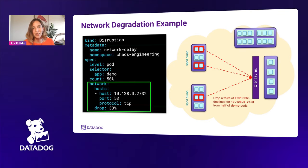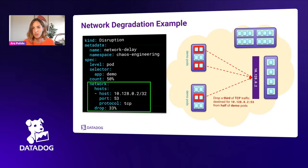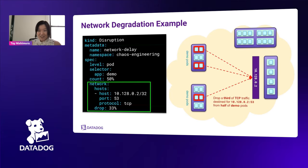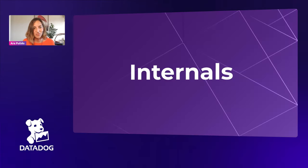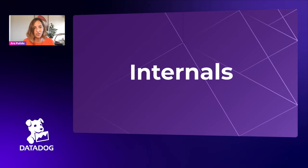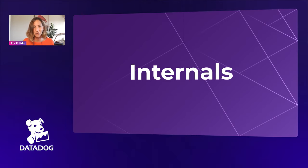From a developer running deployments in Kubernetes, this feels very natural — you use the same label selectors that you use everywhere in Kubernetes. It's easy to get started bringing disruptions into your cluster. Internally, once you've created a disruption, the injector and chaos controller work in a more complex way, which we'll dive into.